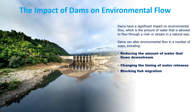Dams have a significant impact on environmental flow, which is the amount of water that is allowed to flow through a river or stream in a natural way. Dams can alter the flow in a number of ways, including reducing the amount of water that flows downstream. Dams can store water for later use, which reduces the amount of water available to flow downstream. This can have a number of negative impacts on river ecosystems.